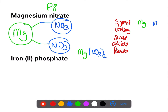Using the other method — symbol, valency, swap, divide, and formula — we have symbols Mg and NO₃, valency two and one. We swap them over so we have one and two. Dividing: we have no common factor here, so we have Mg(NO₃)₂ — and we need to put brackets in.